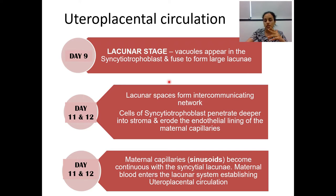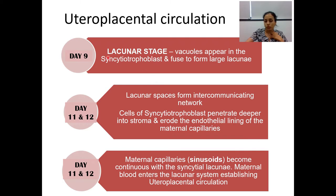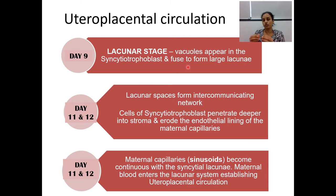Moving on to uteroplacental circulation. The trophoblast has two layers: the syncytiotrophoblast, which invades the endometrium, and the cytotrophoblast, which forms a boundary and undergoes division to replace syncytiotrophoblast cells. Within the syncytiotrophoblast layer, small lumens called vacuoles appear around day nine after fertilization — this is called the lacunar stage.